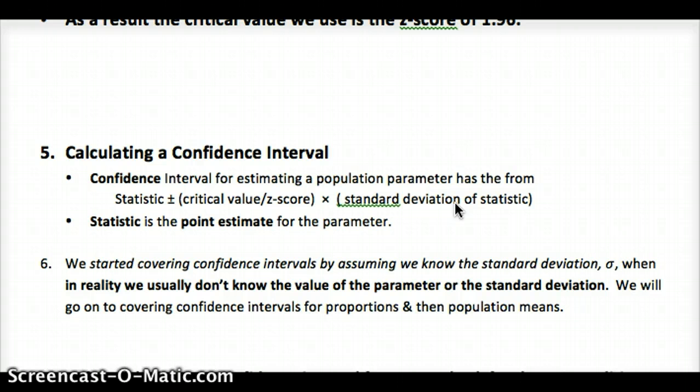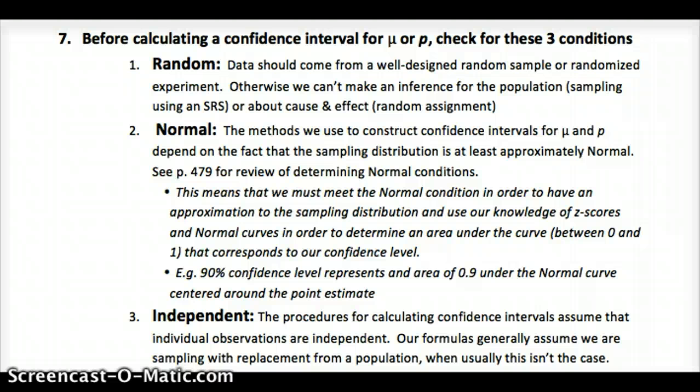So we started talking about confidence intervals knowing we know the standard deviation. We usually don't know the parameter of the standard deviation. We'll be going on to looking at for proportions and then population means when we do this, how confidence intervals work for both of them. Our three conditions: random, normal, and independent. Remember, random is center. We need data that should be from a well-designed, unbiased experiment using an SRS. And random assignment, if it's an experiment. Remember, SRS lets us apply our results to the population from which it came. And random assignment lets us determine cause and effect. The normal condition needs to be met. Remember what that is for proportions and how it's different for means. And in order to know that the approximate shape of our sampling distribution is approximately normal. And then the independent or 10% condition needs to be met in order to use the standard deviation for the standard error.